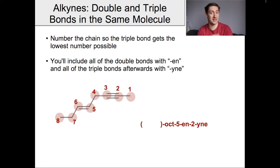The ens go first and the ynes come later. Anything with a double and triple bond will be an en-yne. Notice we chop the E off the end of ene because yne starts with a Y, which technically counts as a vowel in this case. It's just another one of the rules you'll have to deal with.